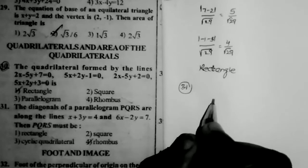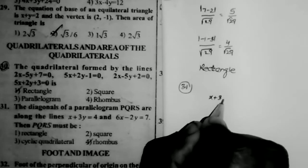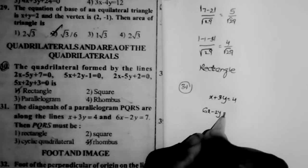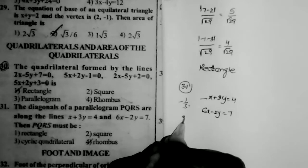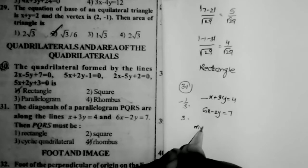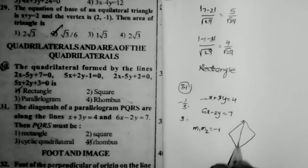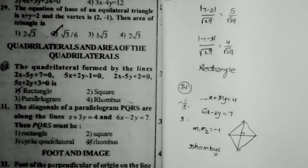Sum number 31: the diagonals of a parallelogram PQRS lie along the lines x + 3y = 4 and 6x - 2y = 7. The slope of x + 3y = 4 is -1/3, and the slope of 6x - 2y = 7 is 3. Since M1 × M2 = (-1/3) × 3 = -1, the two diagonals are perpendicular to each other, which means the parallelogram is a rhombus.